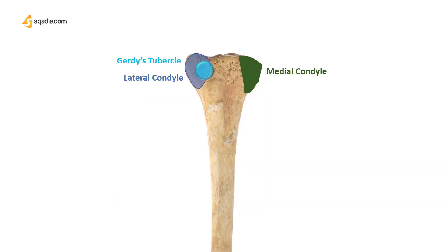The fourth structure of the upper end is the tibial tuberosity, viewed from the anterior aspect. It gives attachment to the patellar ligament, is palpable below the knee, and is also used to determine the size of the tibia bone.